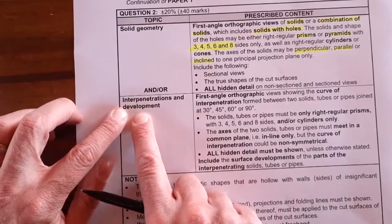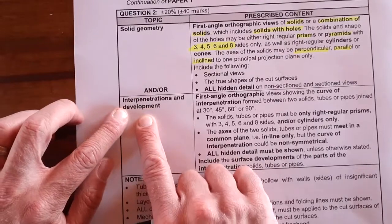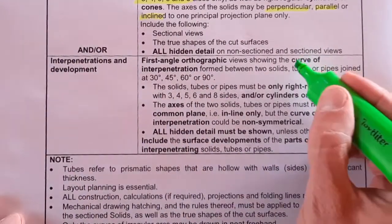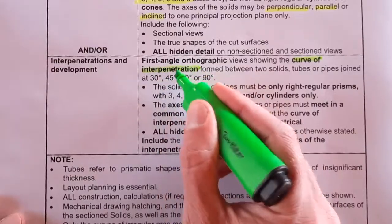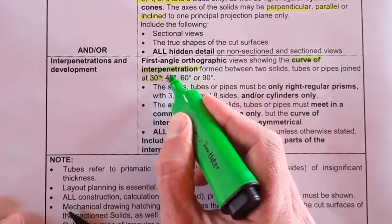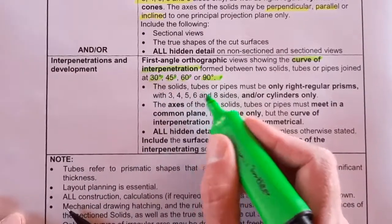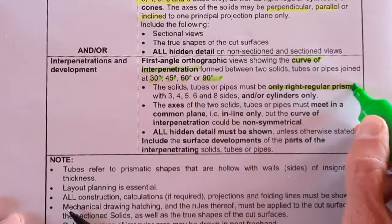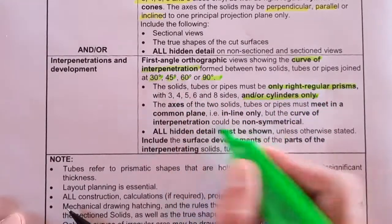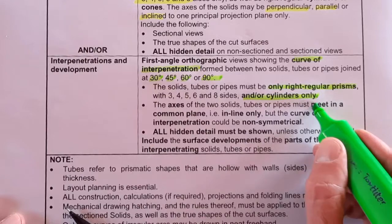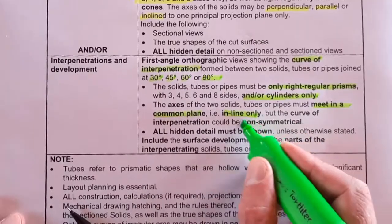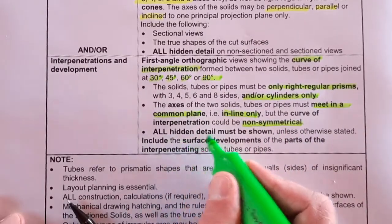Let's look at the second option: interpenetration and development. This was the 2019 paper, so it's possibly likely to be asked again. It requires a first-angle orthographic projection view showing the curve of interpenetration formed between two solids — either tubes or pipe joints at either 30, 45, 60, or 90 degrees. The solids, tubes, or pipes must be only right regular prisms with three, four, five, six, or eight sides, and the axis of the two solids must meet in a common plane.